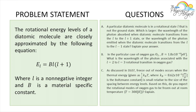The problem we're solving today: the rotational energy levels of a diatomic molecule are closely approximated by the following equation shown on screen, where L is a non-negative integer — 0, 1, 2, 3, 4, 5, and so on — and B is a material-specific constant.